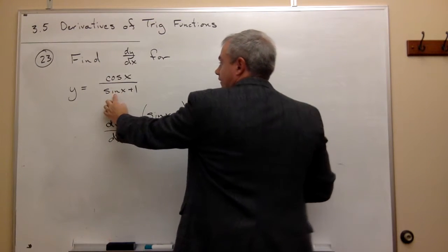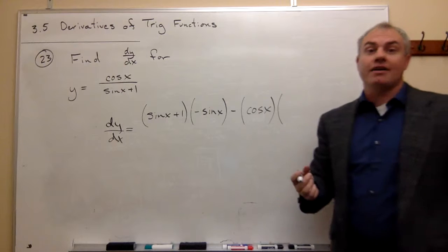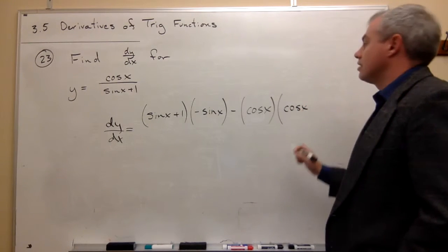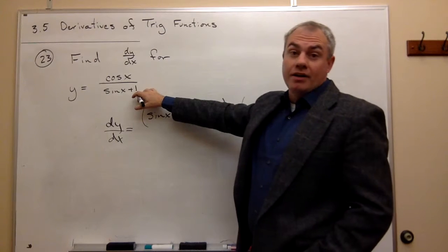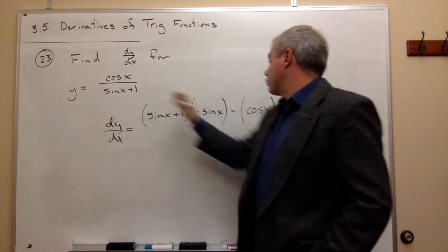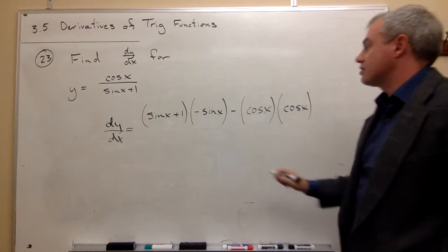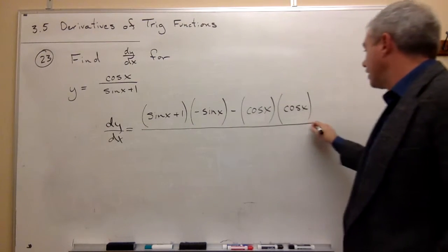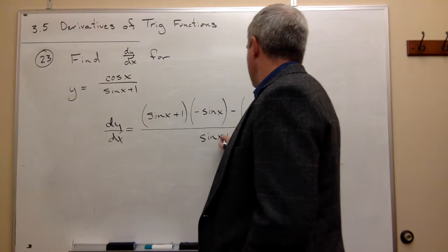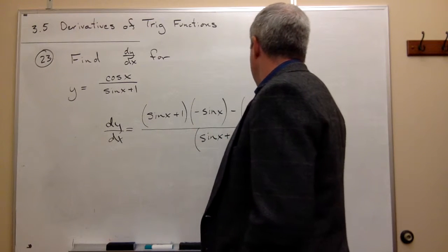Well, what's the derivative of sine of x? The derivative of sine of x is cosine of x. So I write cosine of x. And the derivative of 1 is 0. So the derivative of sine of x plus 1 is just cosine of x. And then I divide by the bottom, sine x plus 1, quantity squared.